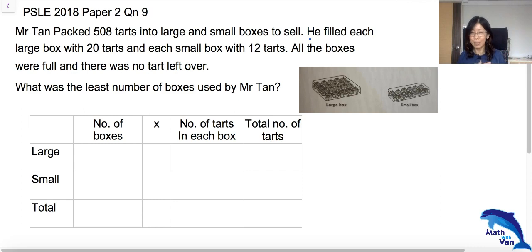This is a total value type of question where the number of boxes multiplied by the number of tarts in each box will give you the total number of tarts. Since there are two types of boxes, we have a certain number of tarts that comes from the large and a certain number from the small boxes, but in total it will give us 508 tarts.